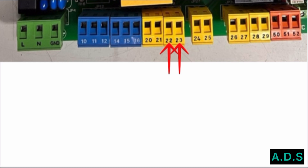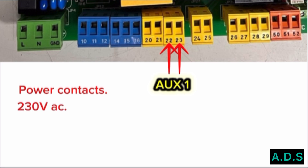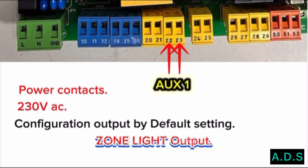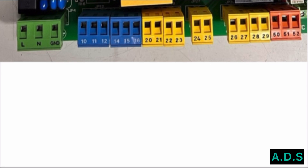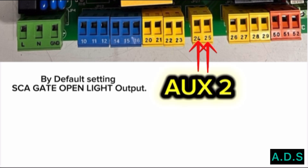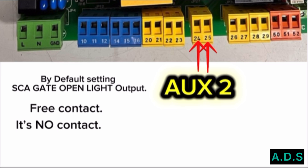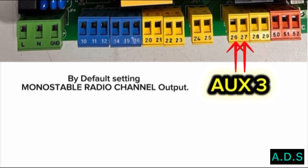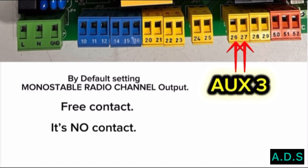Terminals 22 and 23 — AUX1, power contact. The output is 230 volt AC. By default configuration, this is the zone light output. Terminals 24 and 25 — AUX2. By default setting: gate open light output. Free contact — it is an NO contact. Terminals 26 and 27 — AUX3. By default setting: monostable radio channel output. Free contact — it is an NO contact.